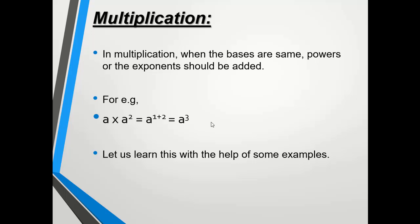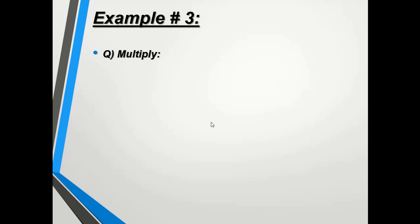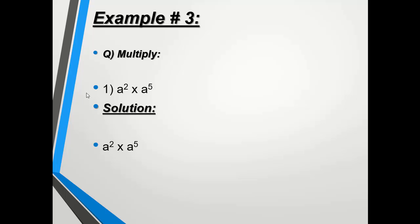Example number three: we have two similar bases, a² and a⁵, with different powers. The rule is that when the same bases are multiplying, the powers are added: 2 + 5 = 7. So our final answer is a⁷.